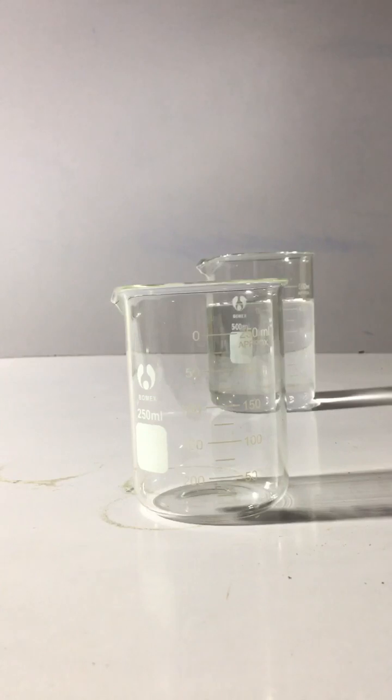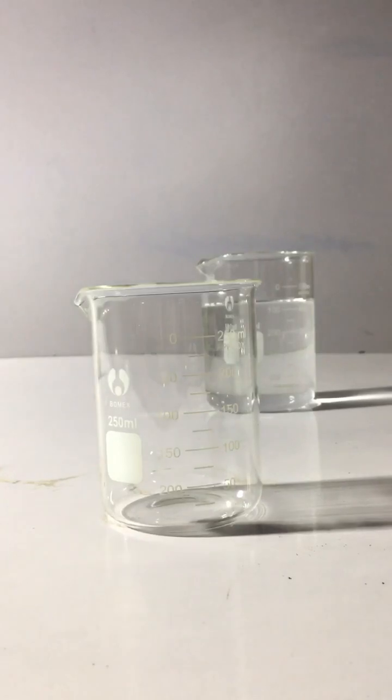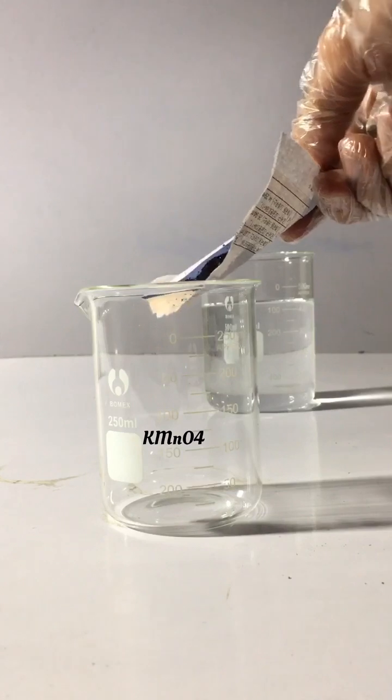Hi everyone, today we will perform an amazing experiment with potassium permanganate and sulfuric acid. First of all, you have to take solid potassium permanganate, as you can see, and put it in the beaker.